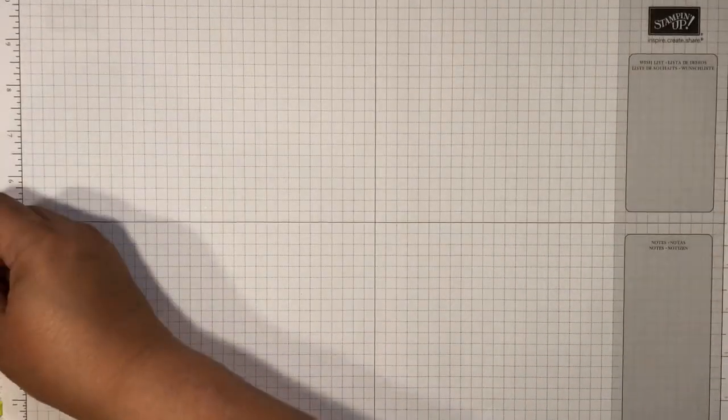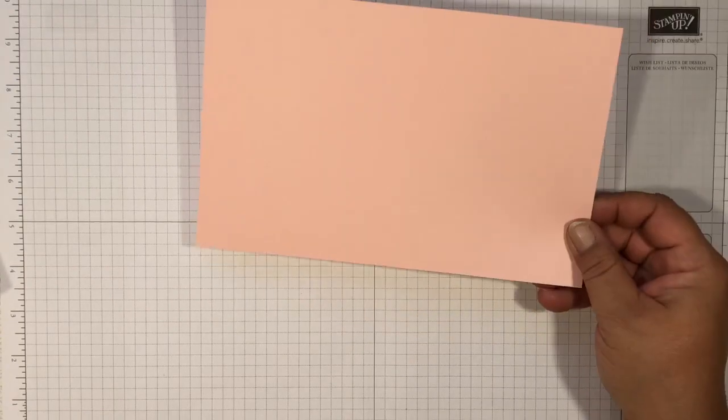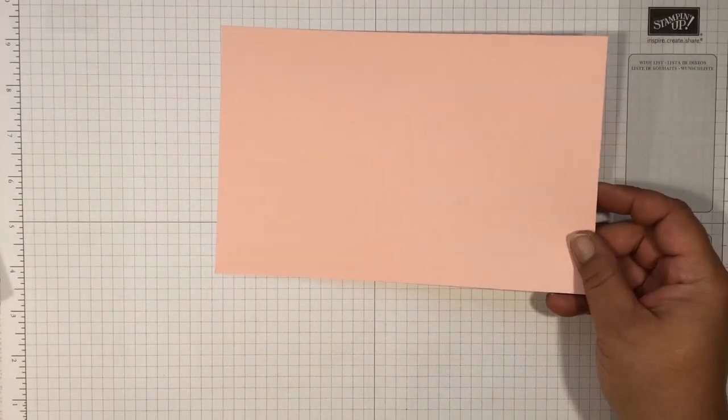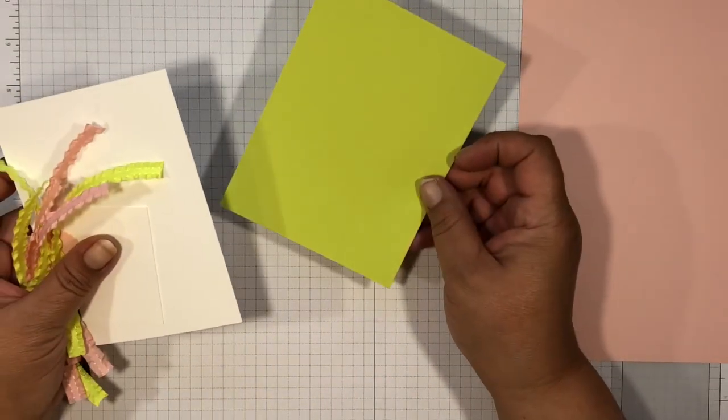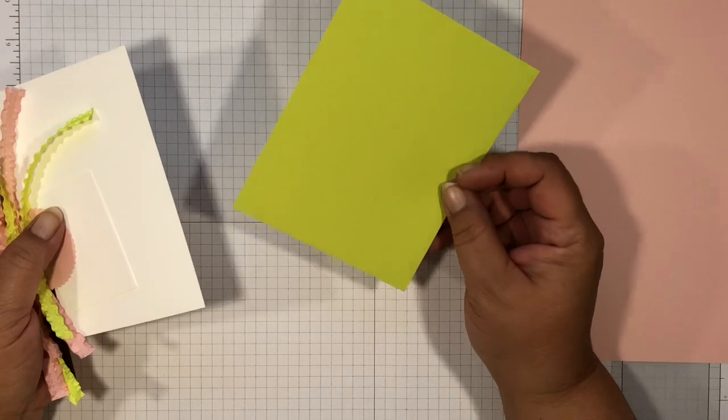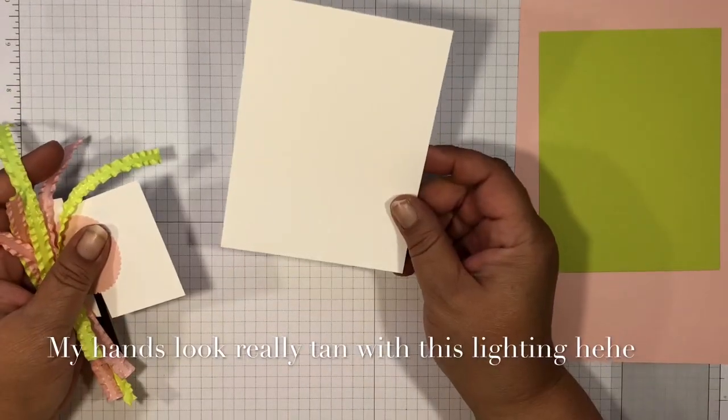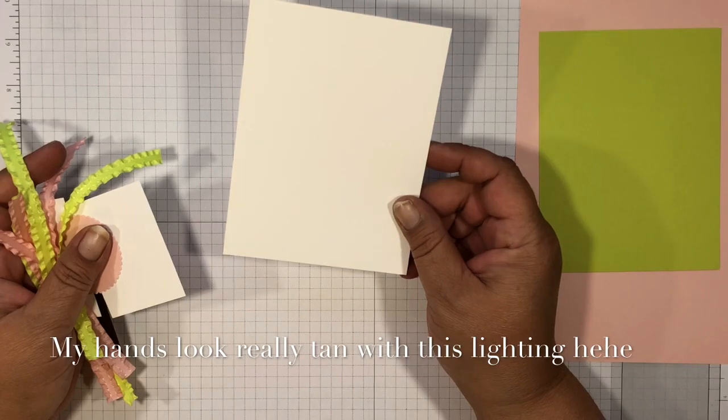Here's what you're going to need. You're going to need a piece of powder pink cardstock cut at five and a half by eight and a half, a piece of lemon lime twist cut at four and eighths by five and three eighths, and a piece of whisper white cut at four by five and a quarter.